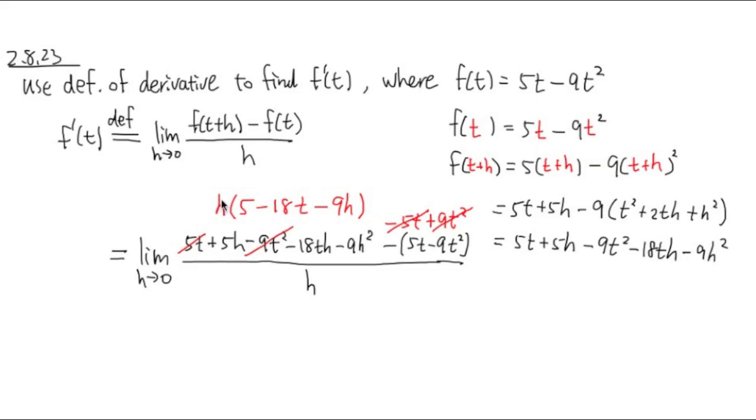And if you do it this way, you can cancel this h and that h together. Then we see that the whole thing is just actually 5 minus 18t minus 9h. That's it. There's not even a denominator left.